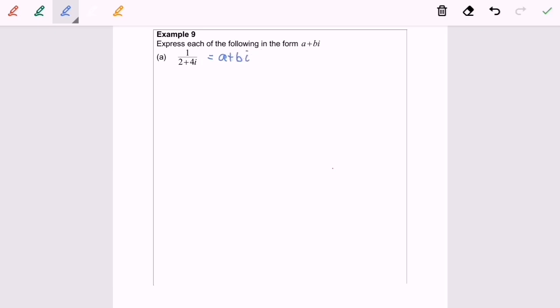Refer to both sides. First, on the left-hand side, the denominator is a complex number, which is 2 plus 4i. When we refer to the right-hand side, the denominator for a plus bi is equal to 1, which is a real number. So in order to make the complex number on the left-hand side become a real number, we need to multiply with the conjugate.